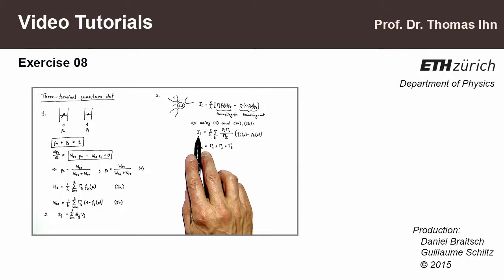In this exercise, we will transfer our knowledge about calculating transport properties of quantum dots within a rate equation model to a three-terminal quantum dot. The first question of this problem is to write down and solve the rate equations for the system.